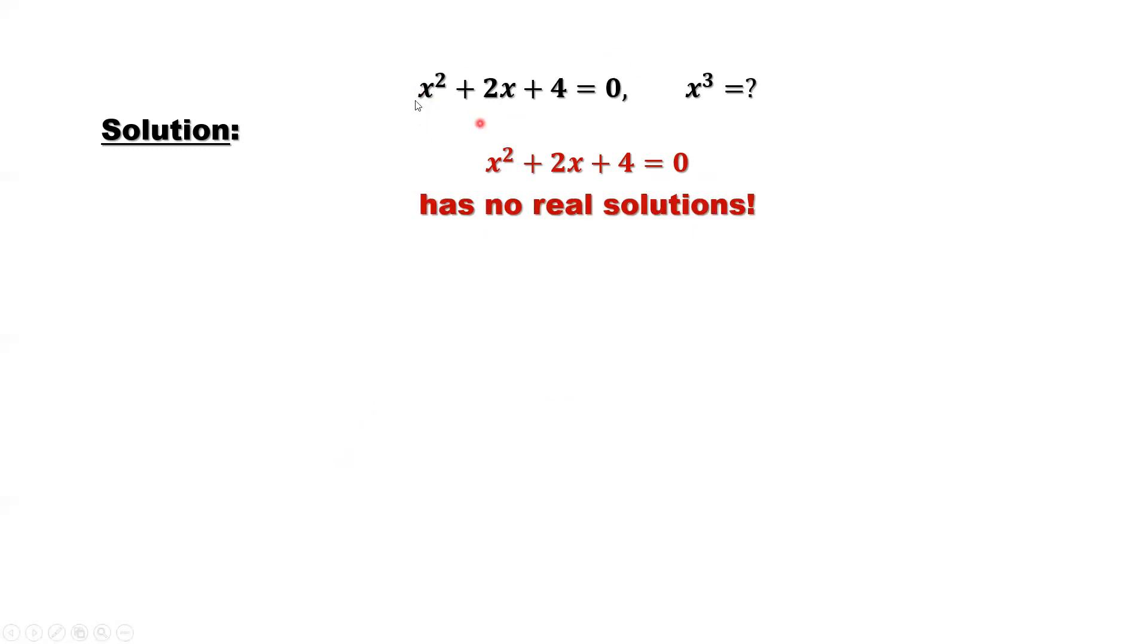From the given condition, we can derive two results. x squared equals negative 2x minus 4. x squared plus 2x equals negative 4. We are going to use the two conditions to derive the answer.